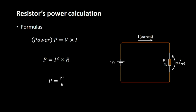These are the formulas for calculation of power in a resistor. The first formula: power is equal to voltage multiplied by the current, where the current is passing through the resistor and the voltage is across the resistor. The second formula is the square of the current multiplied by the resistor value. The last formula: power is equal to voltage squared divided by the resistor value.